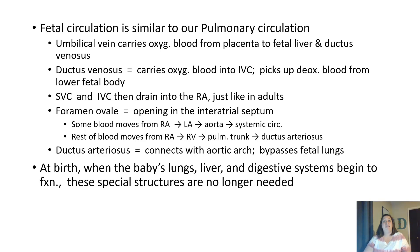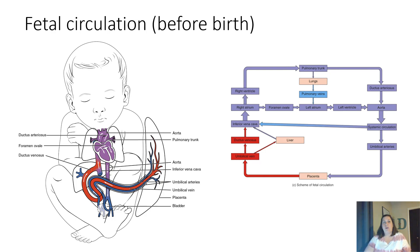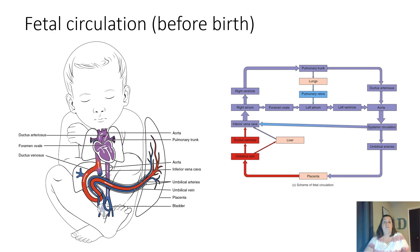The umbilical vein and umbilical artery atrophy and seal off, creating scar tissue we call the belly button. The ductus venosus, foramen ovale, and ductus arteriosus also close off and become like a tendon or closed-off space, no longer functional for blood movement. Sometimes this does not occur, and if it doesn't, the child may still have a hole in its heart that needs to be corrected if it doesn't close on its own. The flow chart shows the placenta connected to the umbilical cord, oxygenated blood picked up through the umbilical vein, through the ductus venosus at the liver, into the inferior vena cava — all purple due to mixing.